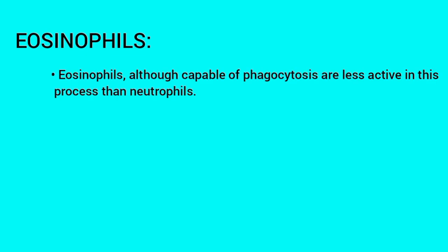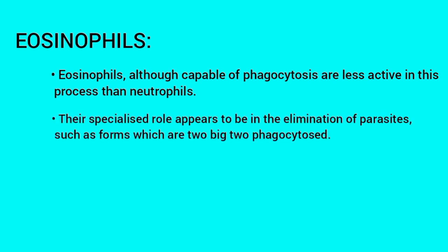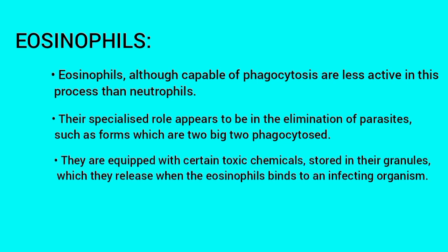Now let us see about eosinophils. Eosinophils, although capable of phagocytosis, are less active in this process than neutrophils. Their specialized role appears to be in the elimination of parasites, such as forms which are too big to be phagocytosed. They are equipped with certain toxic chemicals stored in their granules, which they release when the eosinophil binds to an infecting organism.